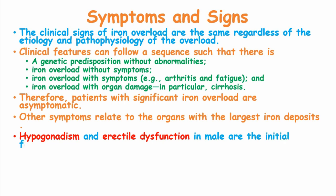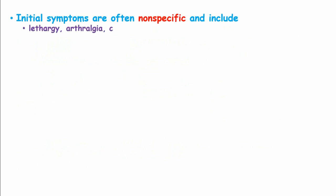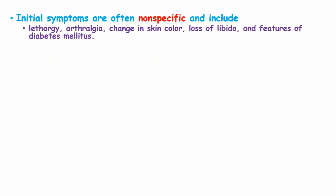Hypogonadism and erectile dysfunction in males are initial features due to gonadal iron deposition. Glucose intolerance together with diabetes mellitus is also common in these patients. Hypothyroidism can also be present. Initial symptoms are often nonspecific and may include lethargy, arthralgias, change in skin color known as bronzing, loss of libido, and features of diabetes mellitus. Hepatomegaly is also a notable finding.